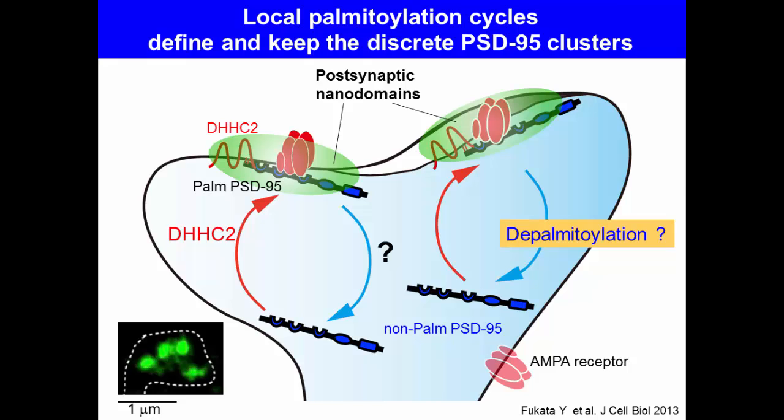Palmitoylated PSD95 then serves as a platform for postsynaptic proteins like AMPA receptors. To understand the whole picture of palmitoylation cycling, the field is now working to identify authentic de-palmitoylating enzymes.